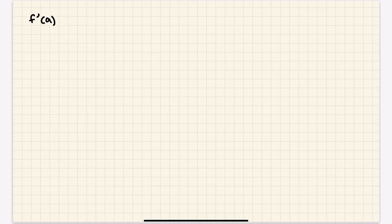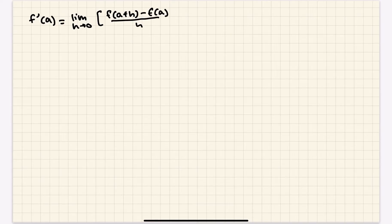So what is a derivative? We're going to define a derivative based on limits — that's the entire reason we did unit 1. A derivative is basically the instantaneous rate of change of a function at a point. We say f prime of a, the derivative at that point, is equal to the limit as h approaches 0 of f(a + h) minus f(a) over h. This is called the difference quotient, and you should know it.